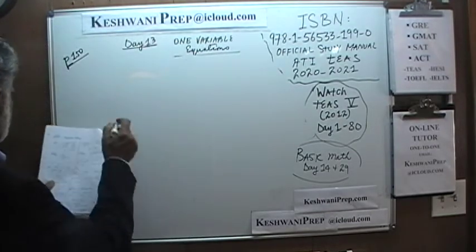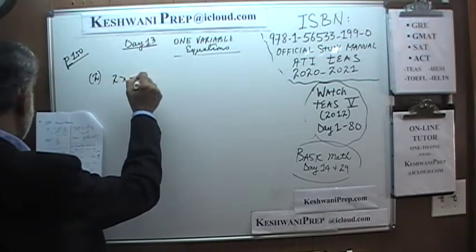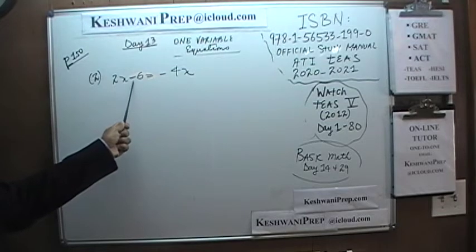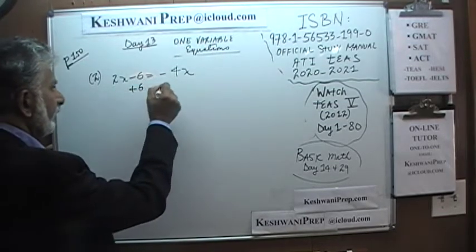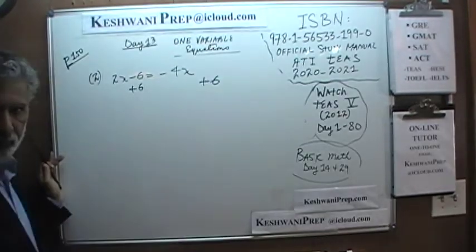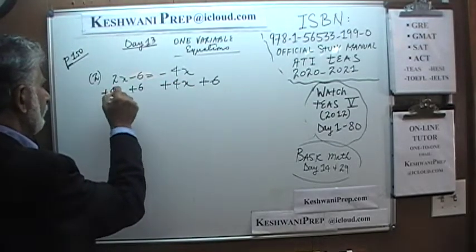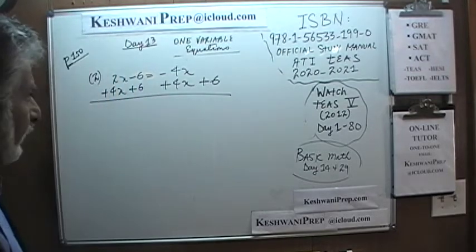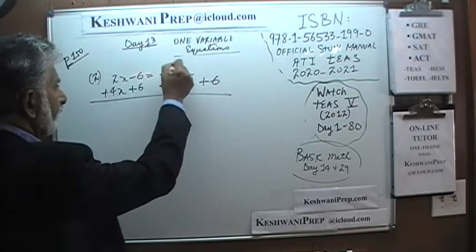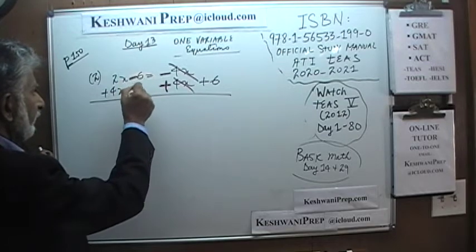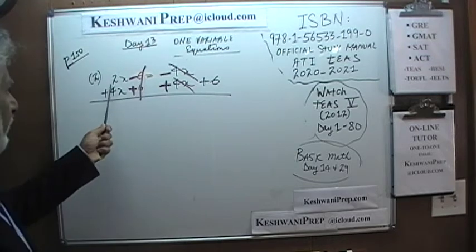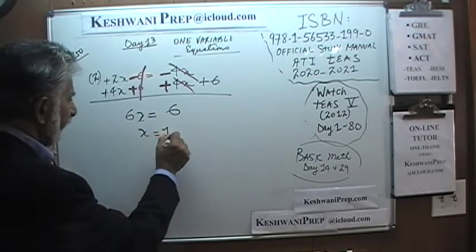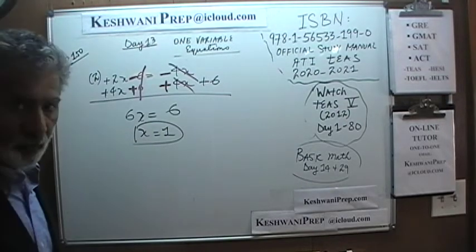We were on number two. It says 2x minus 6 is equal to negative 4x. Two straightforward things we have to do: bring the unknown quantity to one side and the known quantity to the other. Adding 6 to both sides and adding 4x to both sides — you can do these two steps separately if you like. We end up with 6x equals 6, so x must equal 1.